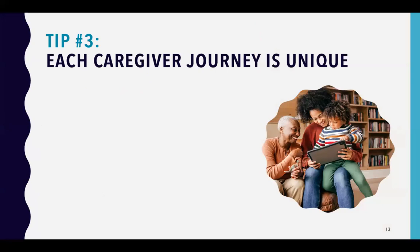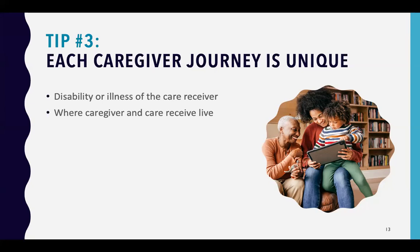All of our caregiving journeys are unique for a variety of reasons. First is the nature of the disability or illness — and very often there isn't just one, but multiple illnesses or disabilities. It's very different caring for somebody with cancer versus caring for somebody who has a leg amputated. Where the caregiver and care receiver live also matters greatly — living with the care receiver is very different from being a long-distance caregiver or living several miles away.